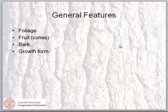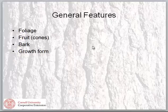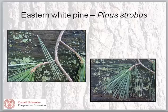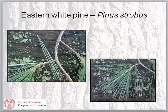We'll be examining four general features of conifers: foliage, fruit, bark, and growth form. The first species is Eastern white pine, Pinus strobus, one with a lot of appeal for several reasons.